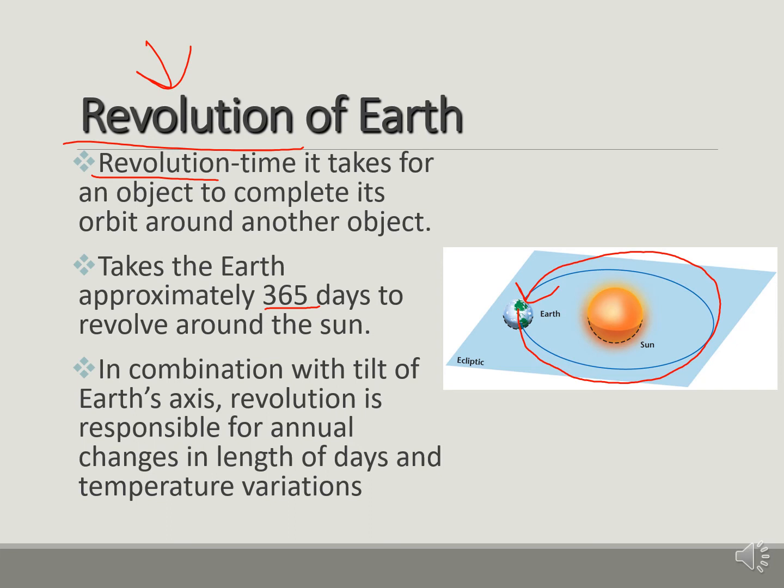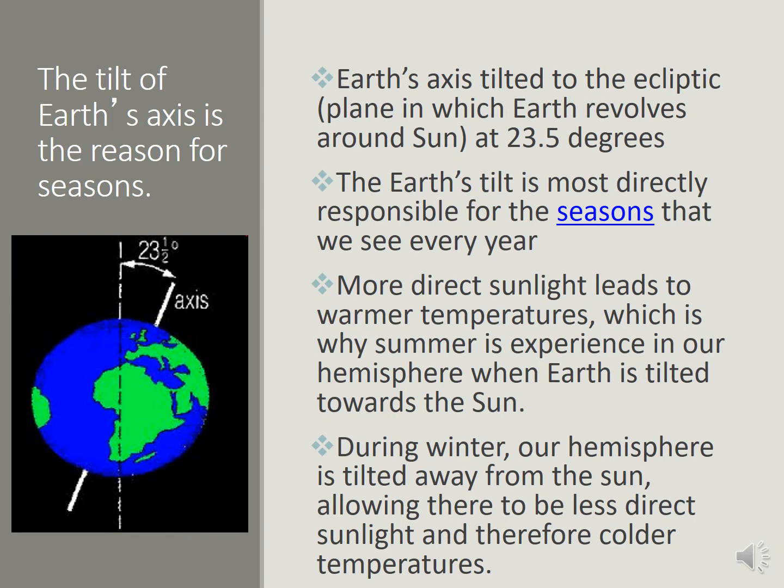In combination with the tilt of the Earth's axis, revolution is responsible for our annual changes. So this is why we have long summers or we have short winters. The reason why we have seasons is because of this right here. The Earth is not sitting straight up. The Earth is actually tilted at 23.5 degrees. As we're tilted, this is what causes the seasons to change.